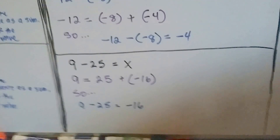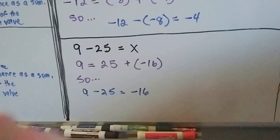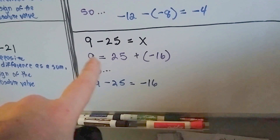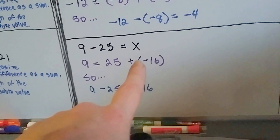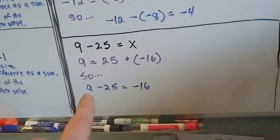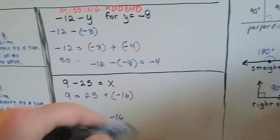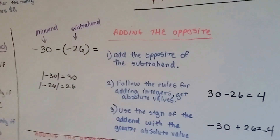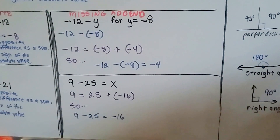Let's try the missing addend approach again. We have 9 minus 25 equals x. The missing addend approach: we spin it around and say 9 equals 25 plus something. What can we add to 25 to make it a 9? We can add a negative 16. So 9 minus 25 equals negative 16. The missing addend approach just flips it around and makes the minuend — the first number — the difference, the answer. Then all you do is find the missing subtrahend, the missing number to make it equal that.